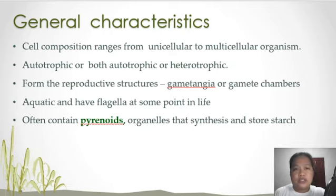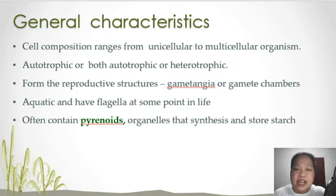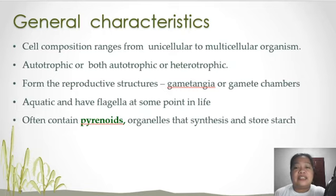In terms of nutrition, they could either be autotrophic or both autotrophic and heterotrophic. In the form of reproductive structures, they either form gametangia or gamete chambers. Some may have flagella, like the euglena, and often they contain pyrenoids — organelles that synthesize and store starch.